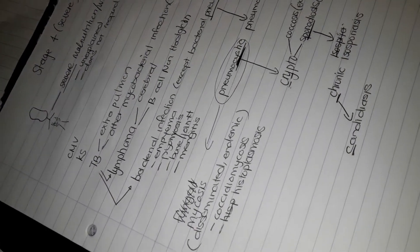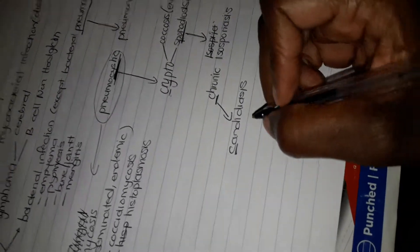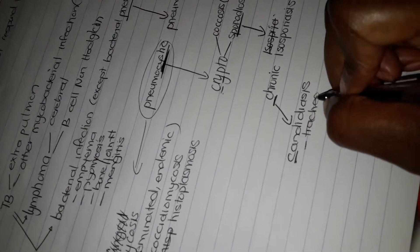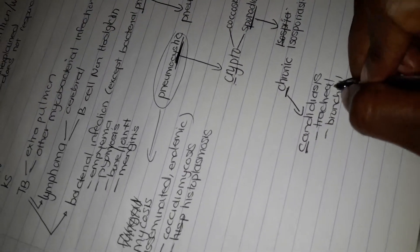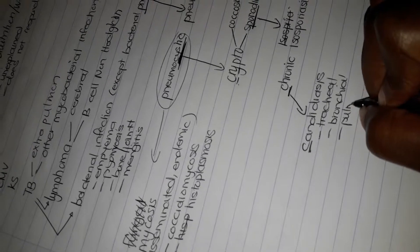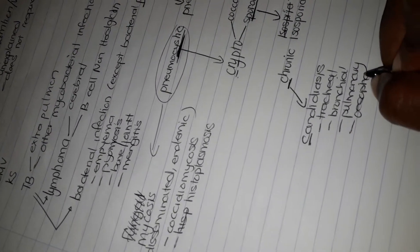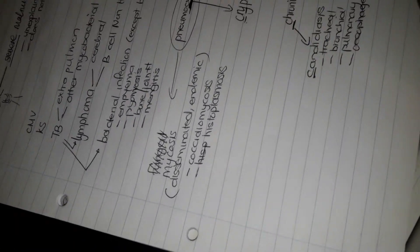It will be esophageal, tracheal, bronchial, and pulmonary candidiasis. So once again, this candidiasis is going to be tracheal, and you go down bronchial, you go down again pulmonary, and then you go into the esophagus, esophageal candidiasis.